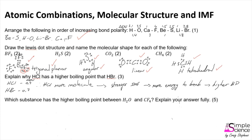When marking this, there are always a number of steps looked for. The first is the comparison of the polarity of the molecules using electronegativity, and being able to say which is the more polar molecule. The next step is comparing the strength of intermolecular forces with energy — HCl has stronger intermolecular forces and requires more energy to break. The final step is saying that since it requires more energy to break, it has a higher boiling point.